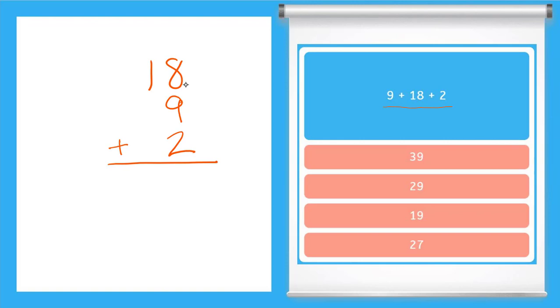I'm going to carry my 1, bring down my 9, and then I just add my tens place. So I have 1 plus the 1 that I carried is 2. My final answer, I always box it, is 29.